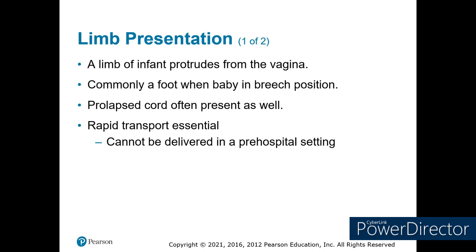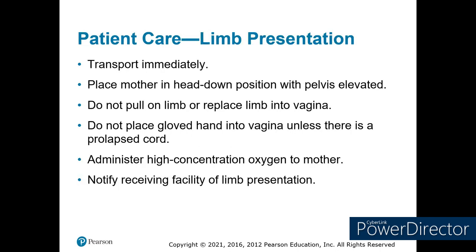For a limb presentation: footling breech — get the feet out, protect the neck from the cervix, and deliver the head. If it's an arm breech, the baby is not coming out sideways — that requires a C-section. Prolapsed cord is an emergency: the cord is being compressed against the vaginal wall by the baby as it passes through, cutting off blood flow before the baby can breathe.